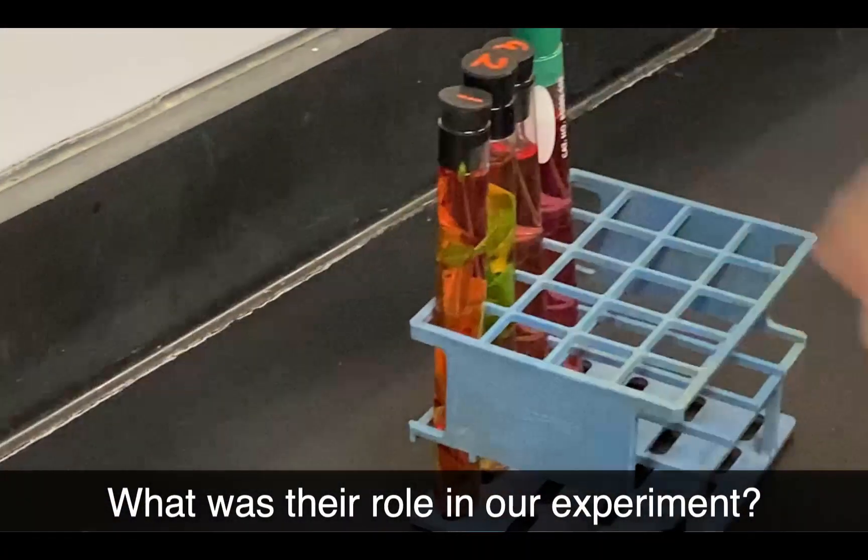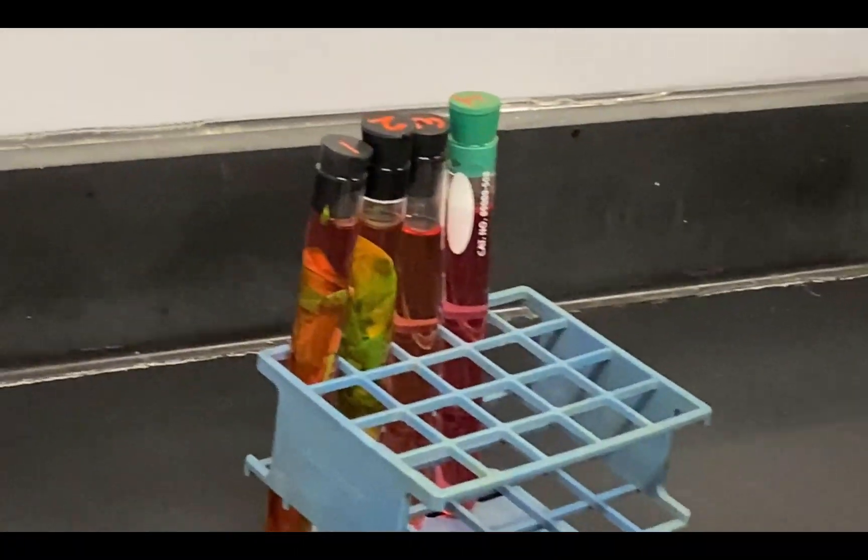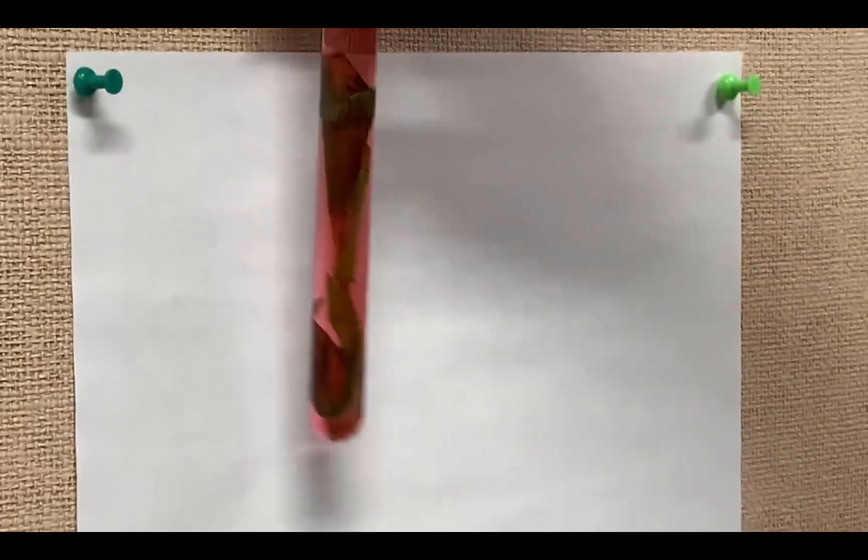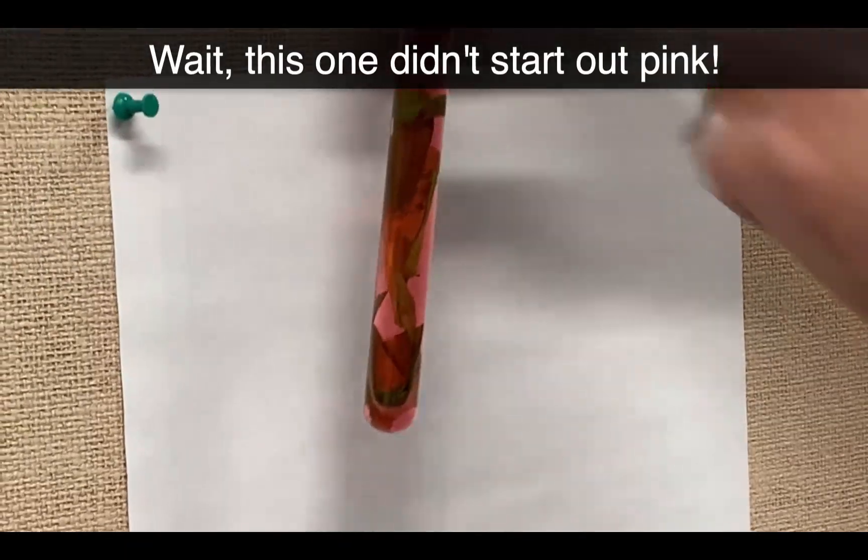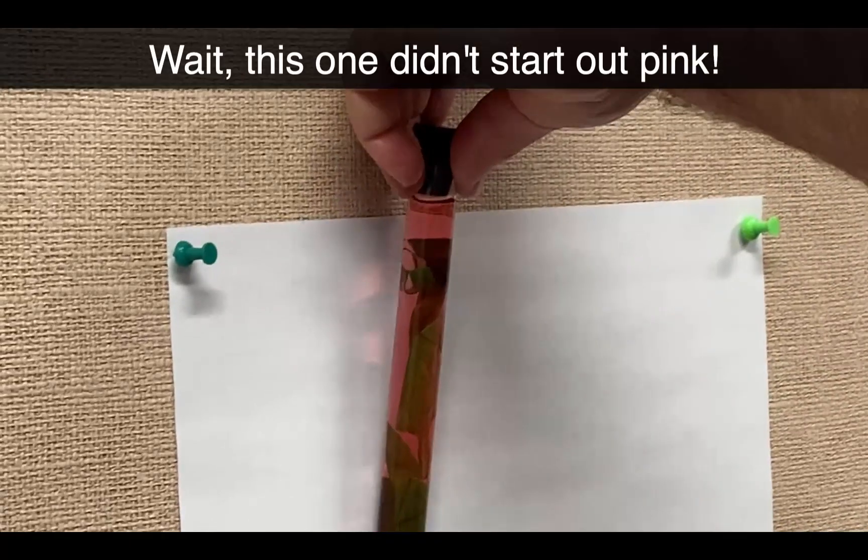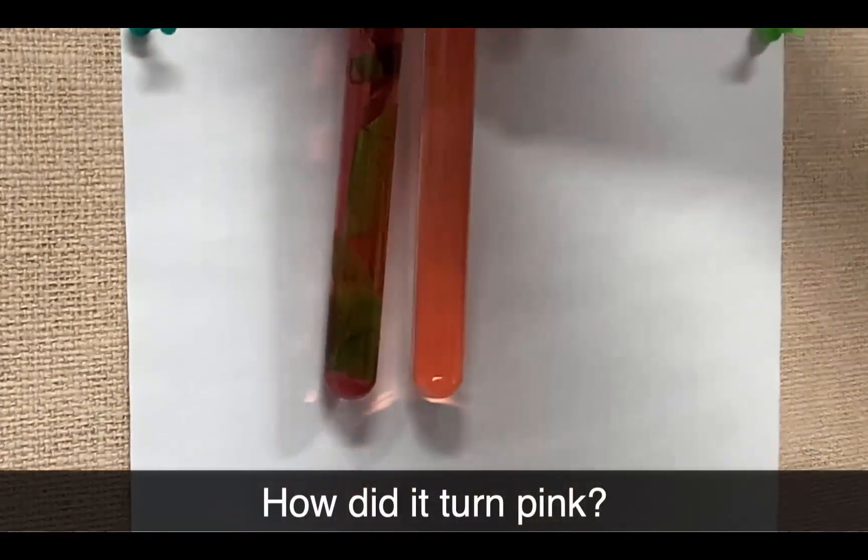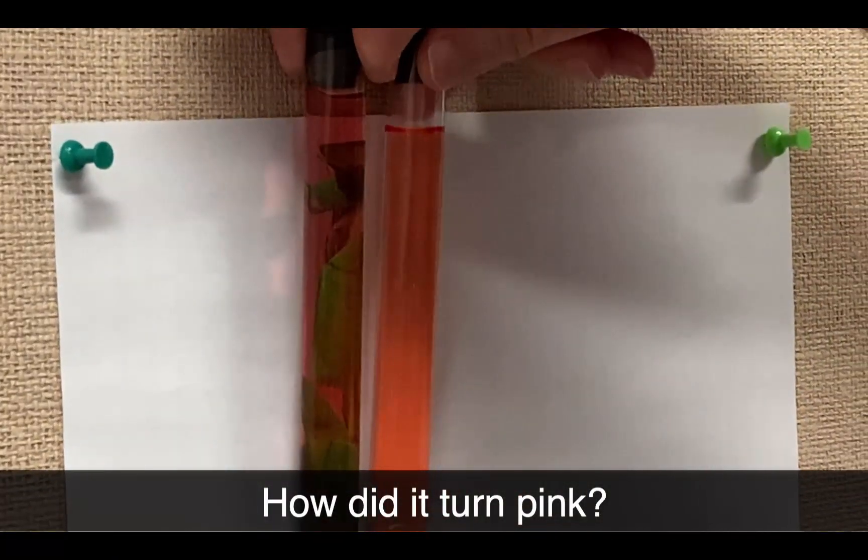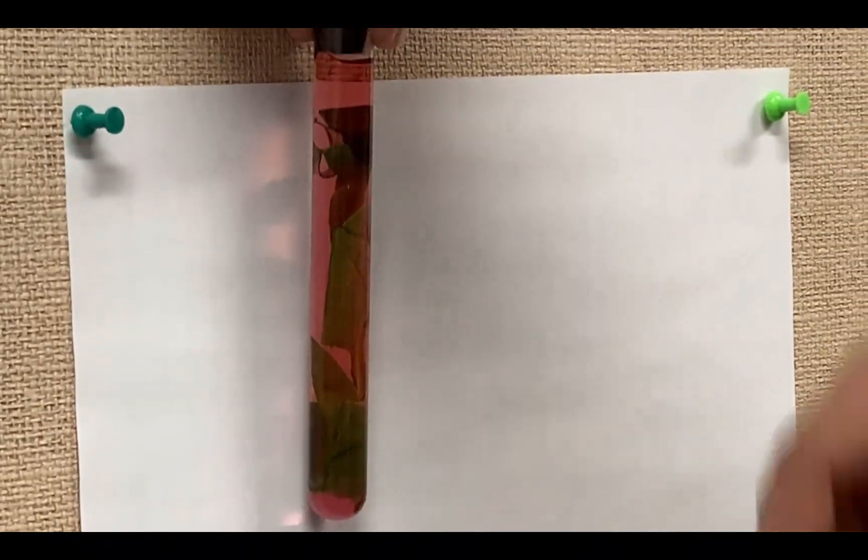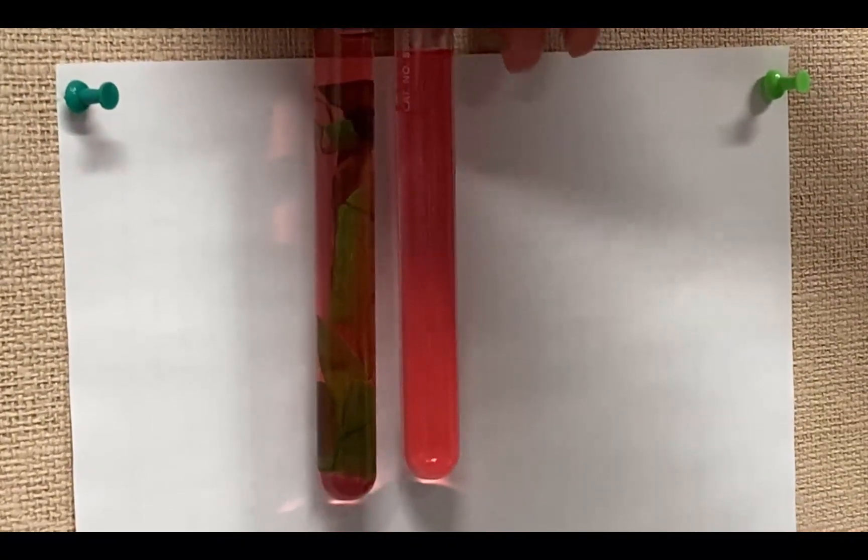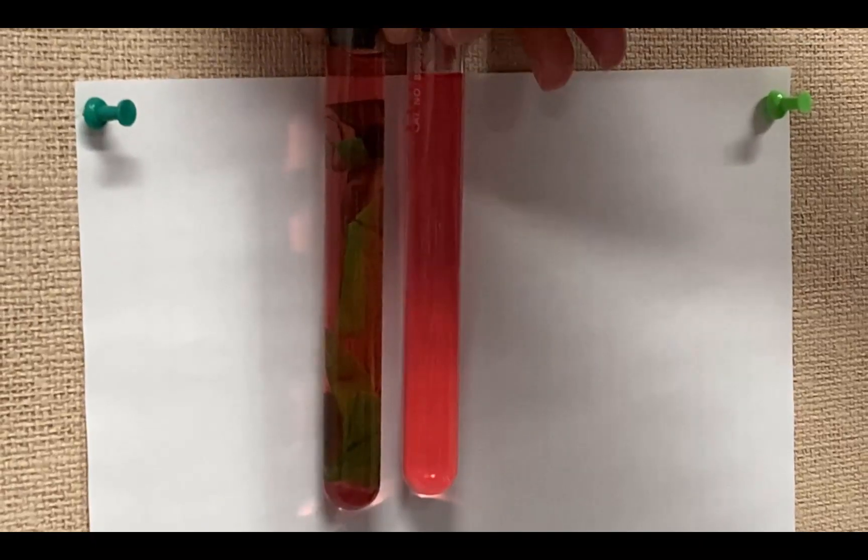Now let's take a look at tube number one. It looks nice and pink. How do I know for sure? I can compare it to tube number three and see that tube number one is definitely more pink. Comparing it to tube number four which started out pink, we can see they have about the same coloration.